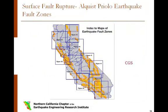The Alquist-Priolo Act prohibits the construction of most structures for human occupancy across traces of active faults. The Act also requires sellers and real estate agents to inform buyers whether real property being sold is within a state-designated earthquake fault zone. As of March 1, 2000, the Department of Conservation Division of Mines and Geology has 554 regulatory maps designated as earthquake fault zone maps, available to assist cities and counties in avoiding the hazards of surface fault rupture.